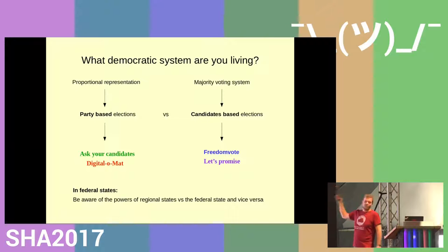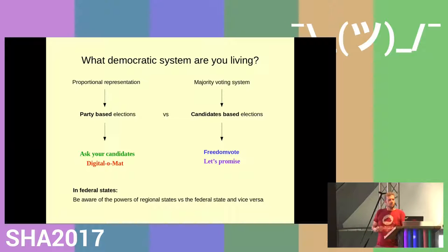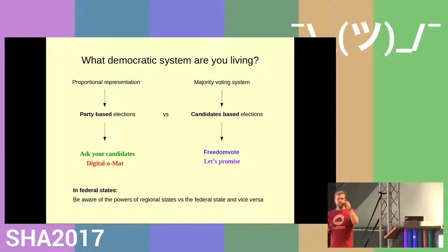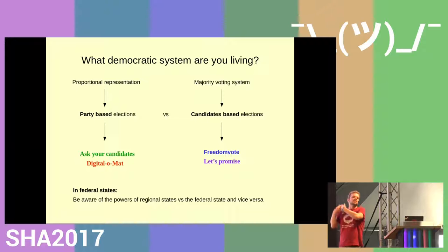Ask Your Candidates and Digital Omat work for party-based elections. Freedom Vote and Let Them Promise are the campaigns particularly for candidate-based elections — parties won't sign a charter, and Freedom Vote is where users compare themselves with individual candidates. Also, if you are in a federal state, be aware there are different power levels: don't ask federal parties about topics decided on the state level and vice versa.